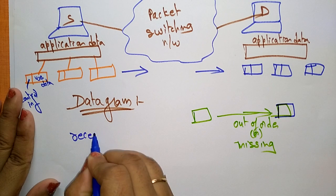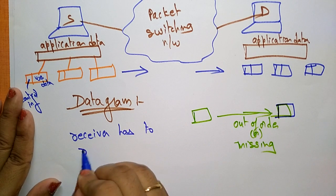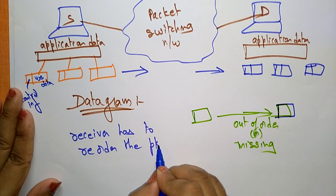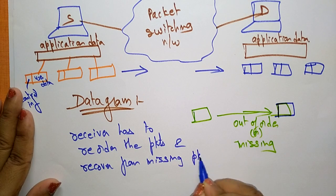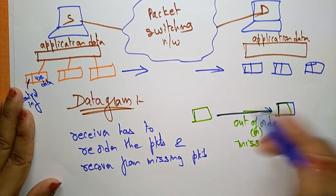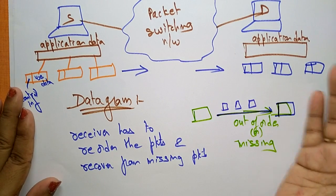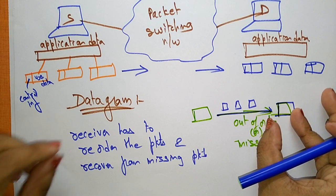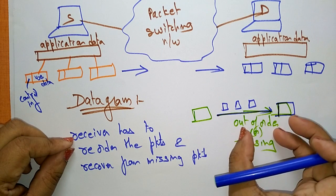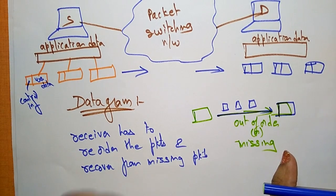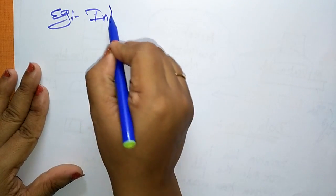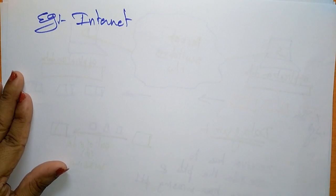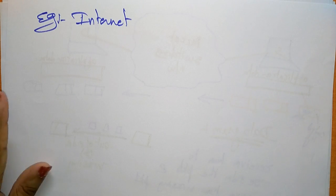The receiver has to reorder the packets and recover from missing packets. The source simply sends the packets — the message is split into packets and those packets are sent from source to destination. The receiver has to play a role: it must take the packets, arrange them in the correct order, and recover any missing packets. A main example of this datagram approach is the internet, which uses packet switching.